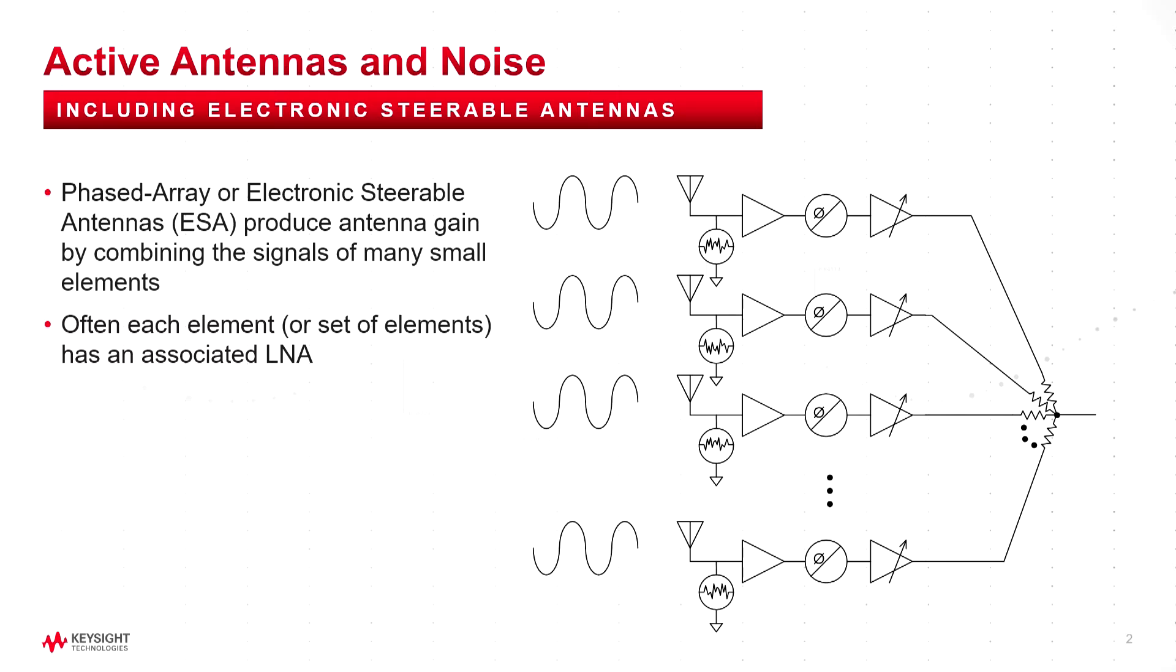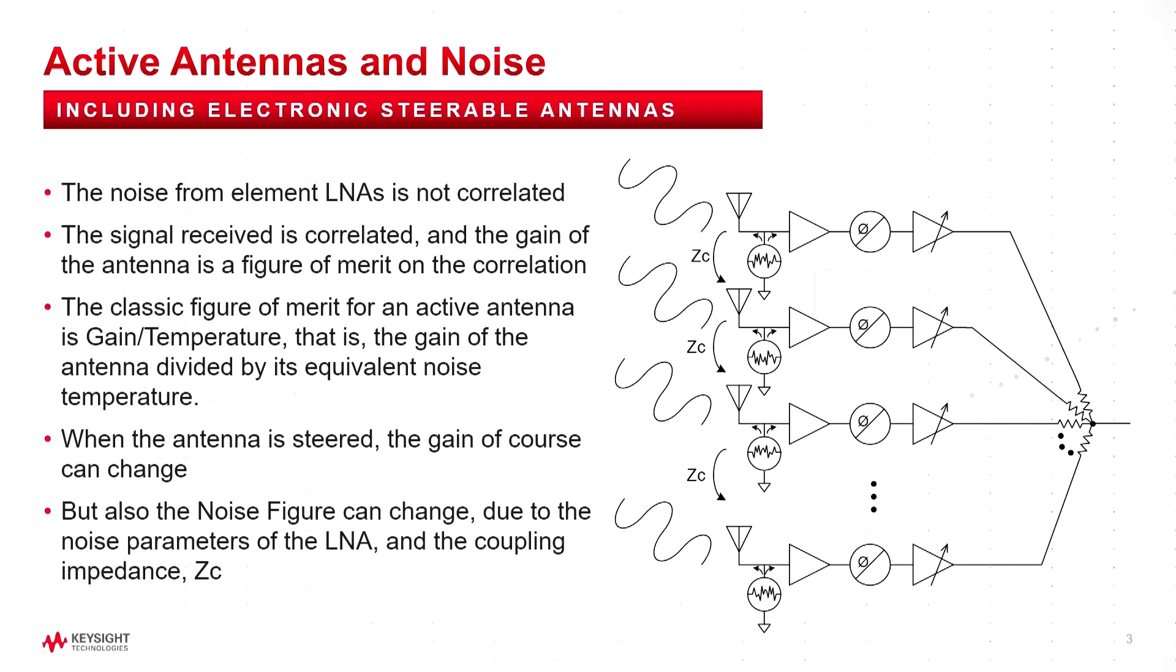The wavefront coming in is coherent in general but for G/T measurements you'll see in a minute they may not be coherent. One of the problems is as you beam steer the antenna there's some question depending on this design how the coupling impedance will affect the noise from one element to another. So realistically they have to be measured in a beam steered condition.